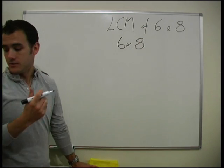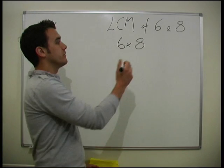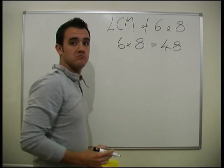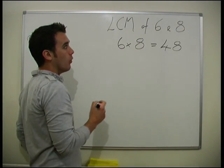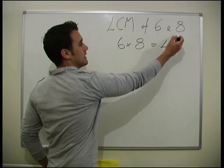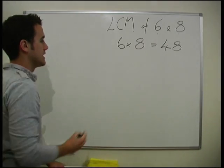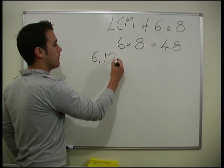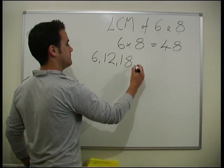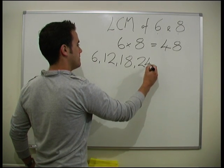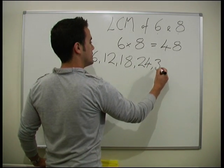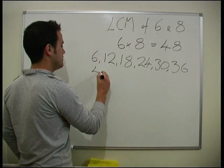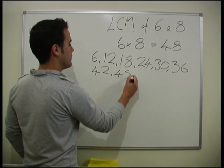OK? 6 times by 8 is obviously 48. OK. So now we do all the multiples of 6 and 8 up to 48. So we'll start with 6. 6, 12, 18, 24, 30, 36, 42, 48.